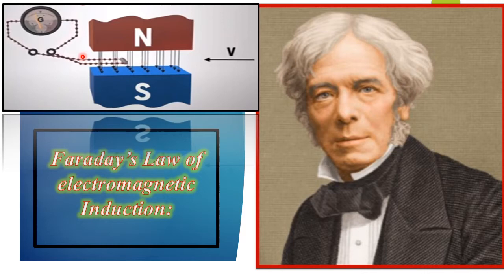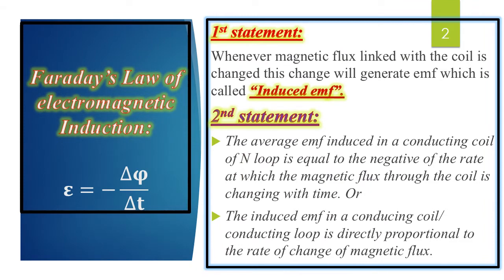This process was named Electromagnetic Induction. The EMF induced was named Induced EMF, and the resulting current was named Induced Current. Faraday observed that when the electromagnetic flux linked with a coil is changed, this change generates an EMF, which is called Induced EMF.